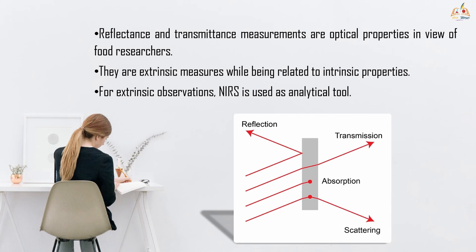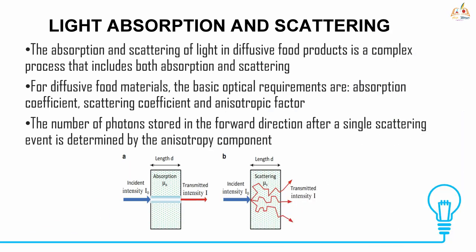Without wasting any time, let's dive into our topic. Optical properties: reflectance and transmittance measurements are the optical properties in food research. They are extrinsic measures while being related to intrinsic measures. Extrinsic property means characteristics not belonging to the material, while intrinsic property means characteristics inherent to the material. For such extrinsic observation, near infrared spectroscopy is used as an analytical tool.